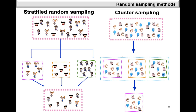In stratified random sampling, you start with a population and divide the population elements into strata that are mutually exclusive, meaning an element can only be placed in a single stratum. Then you take a sample from each stratum that is proportional to the representation of that group within the population. You then combine all the samples collected from each stratum to get a final sample that is representative of your population. The technique and how to determine the number of elements to sample from each stratum is clearly outlined in section 6.1.2 of your practical guide.